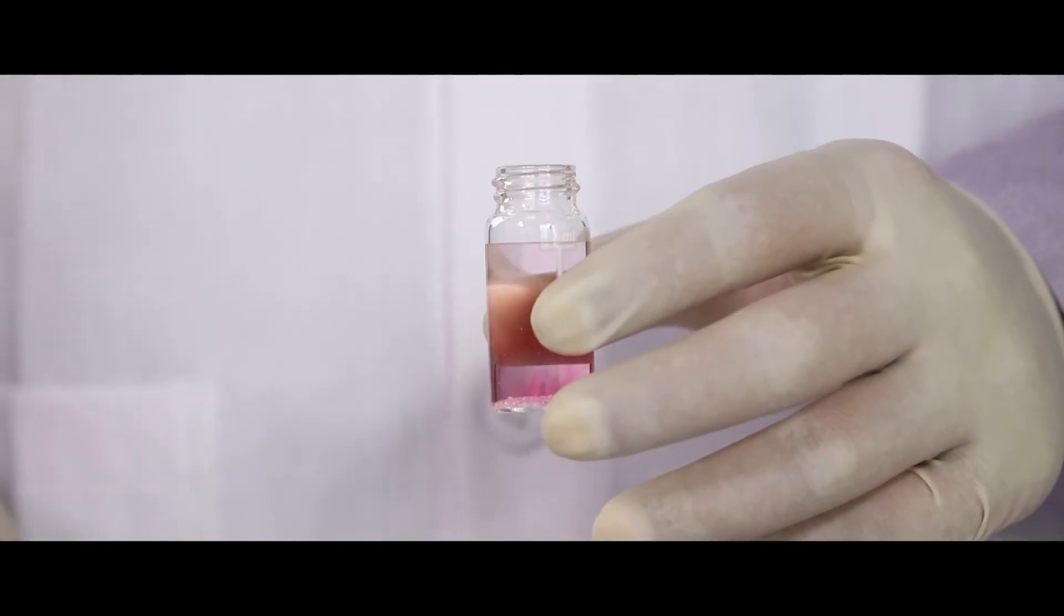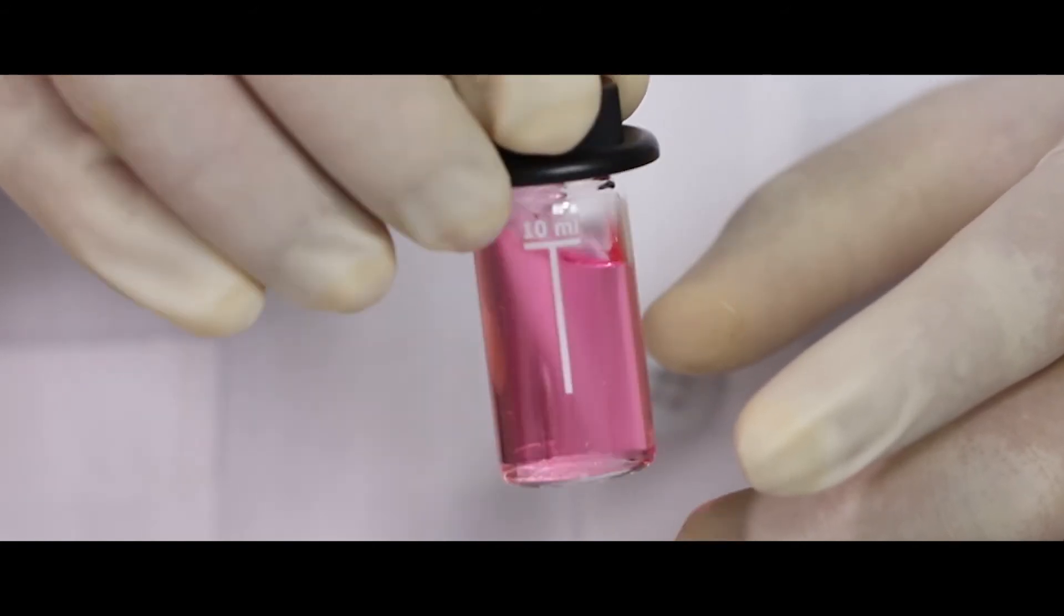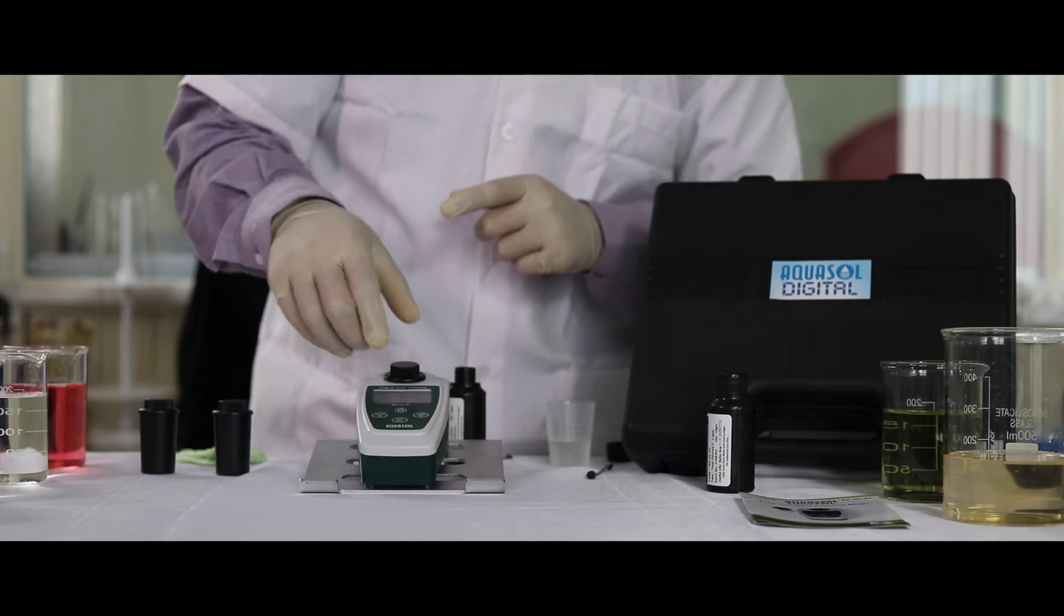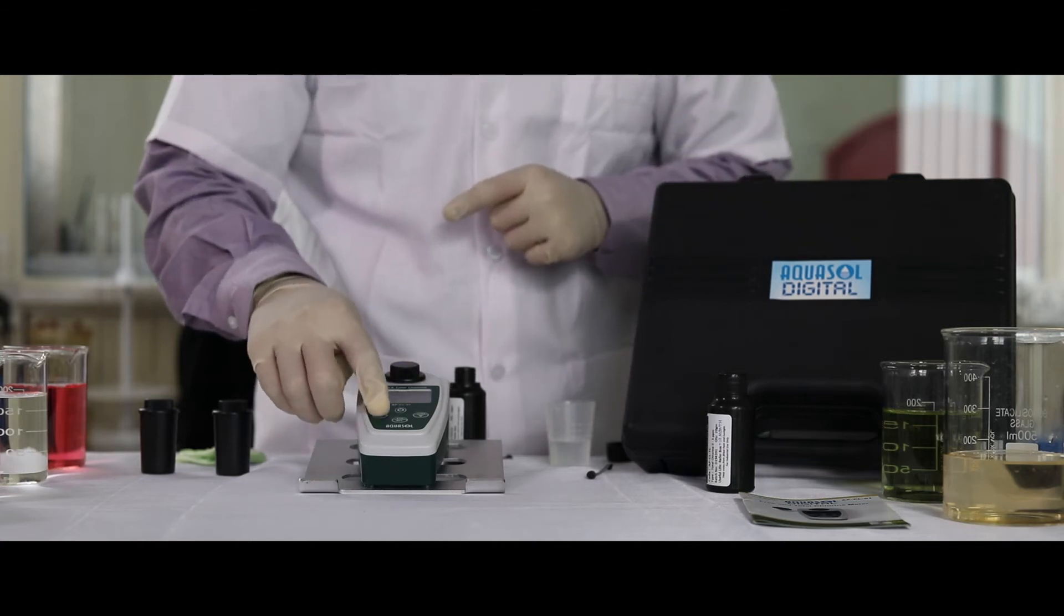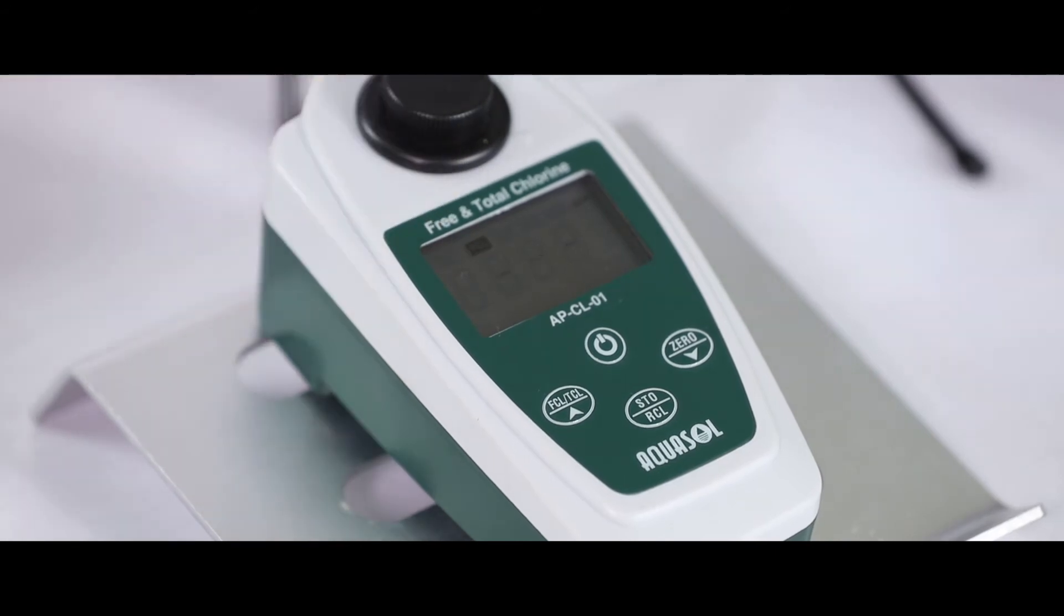Shake the bottle until the reagent is dissolved completely. Align the mark and place it back into the meter and press FCL slash TCL key for reading.